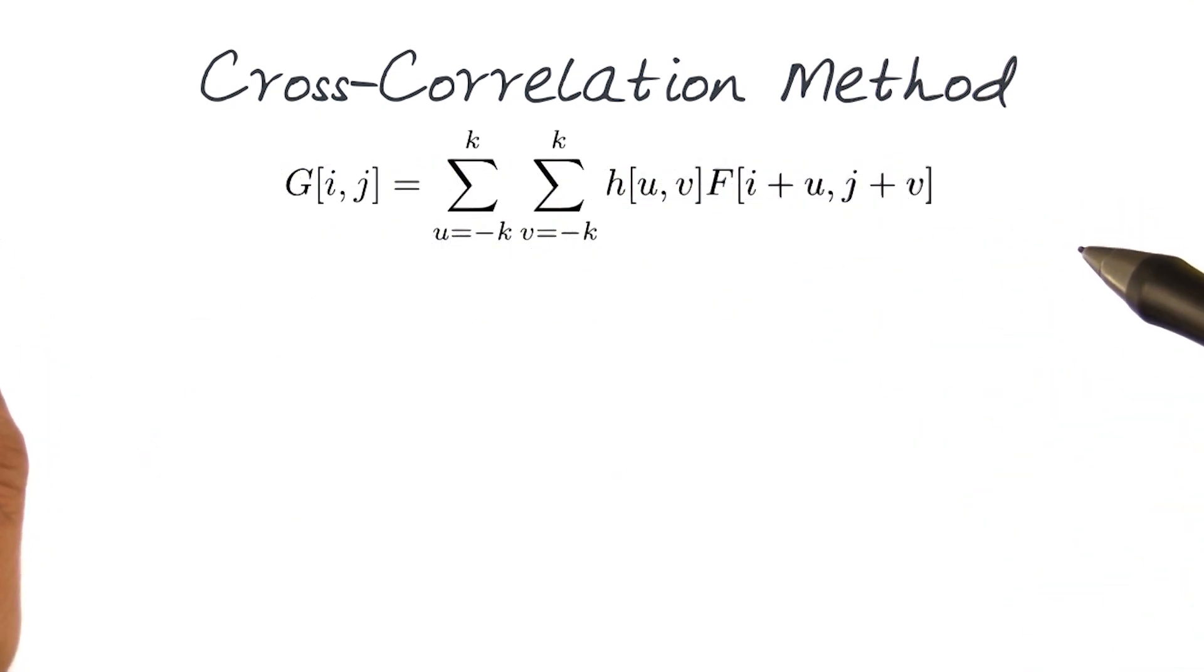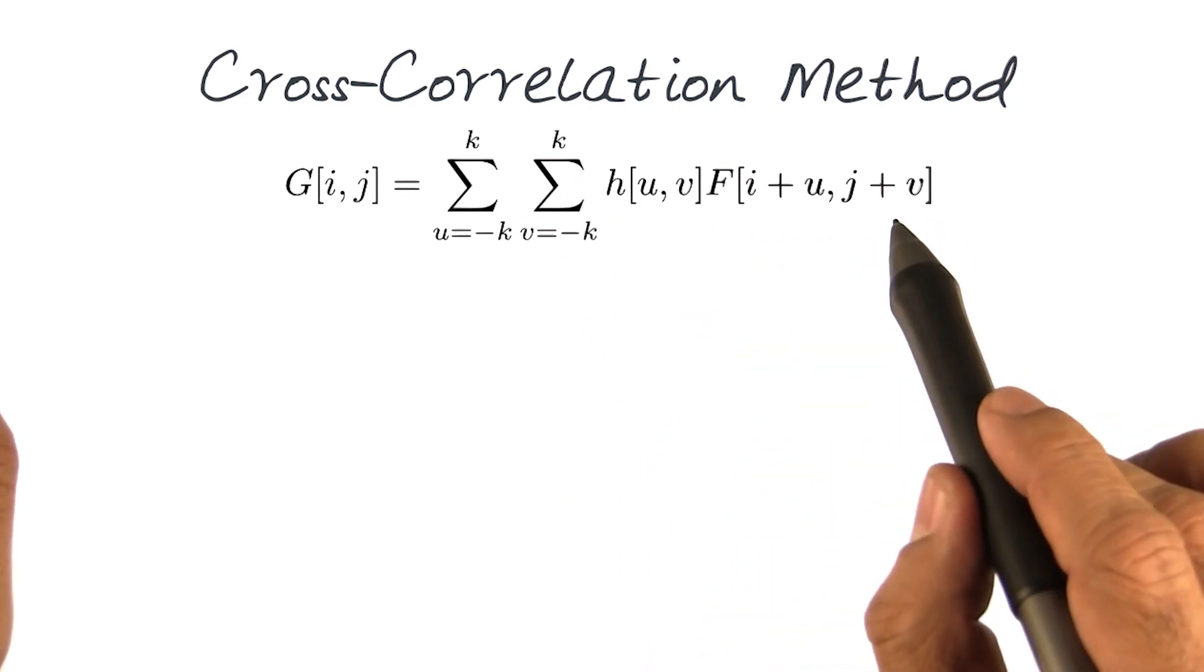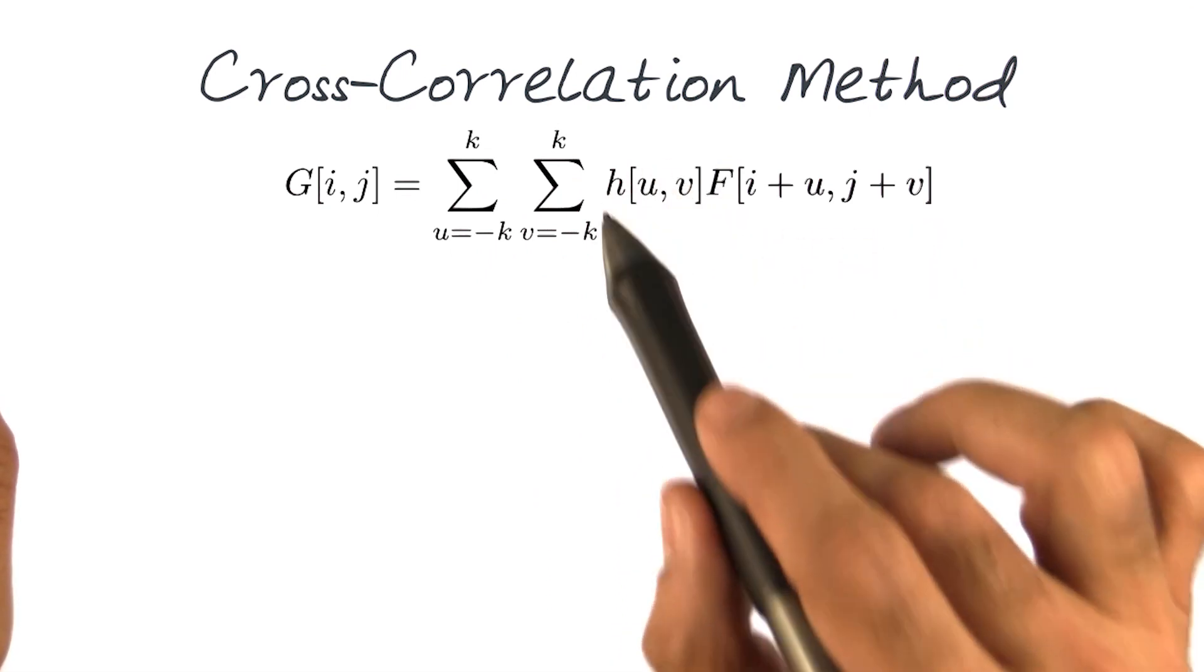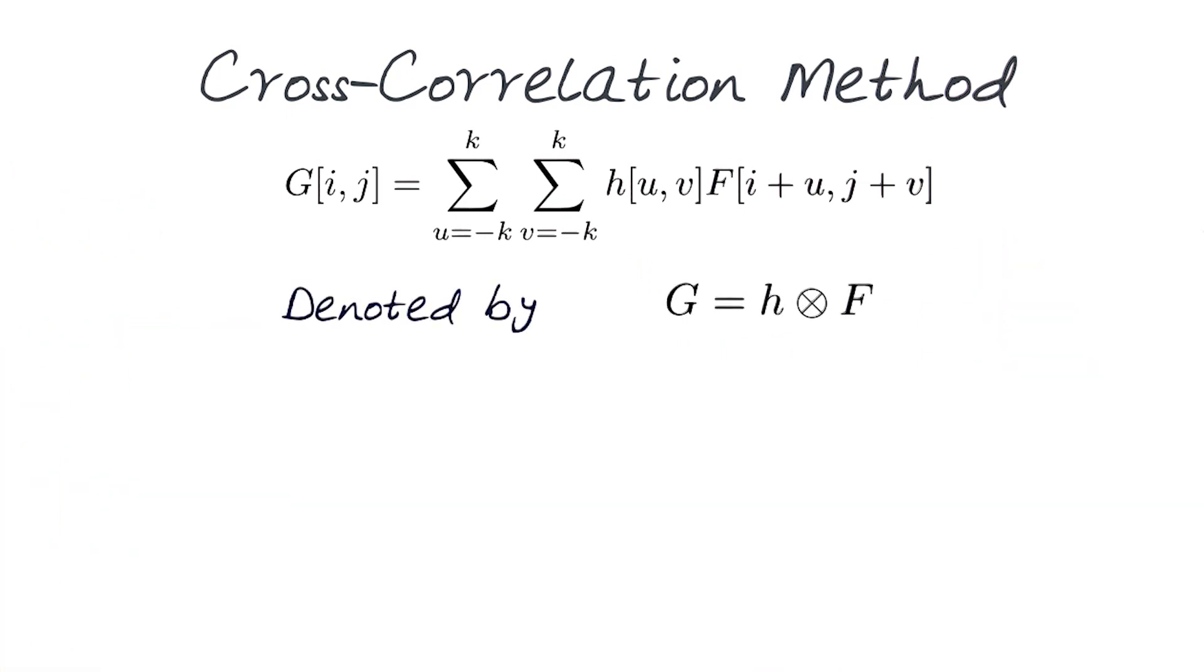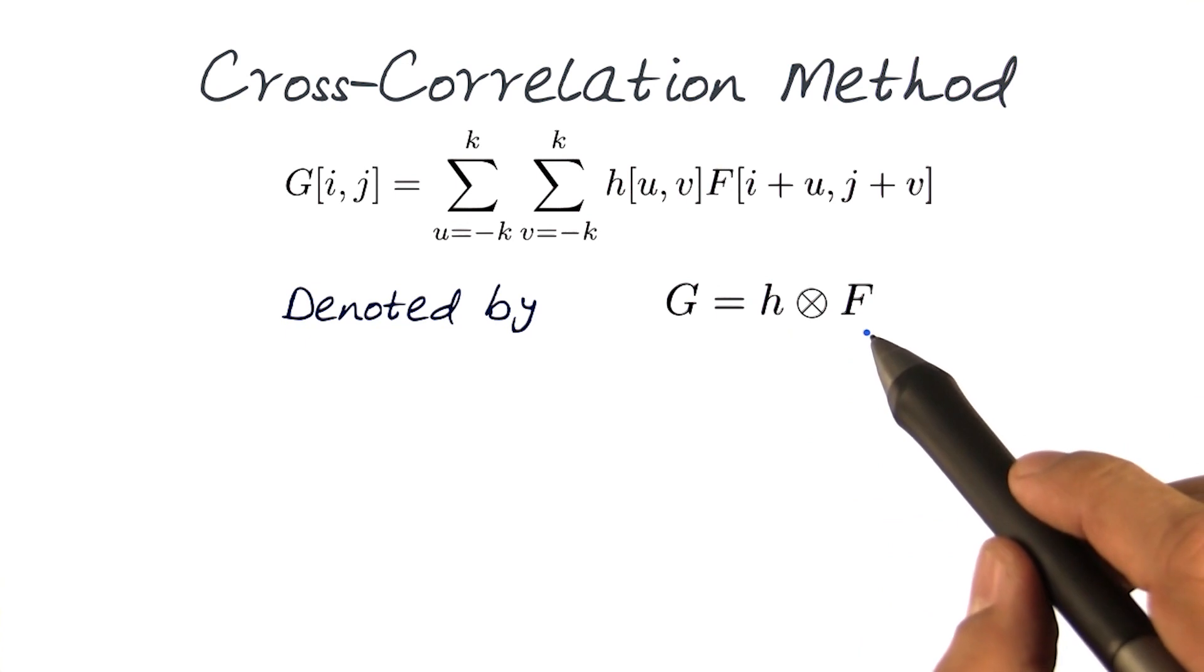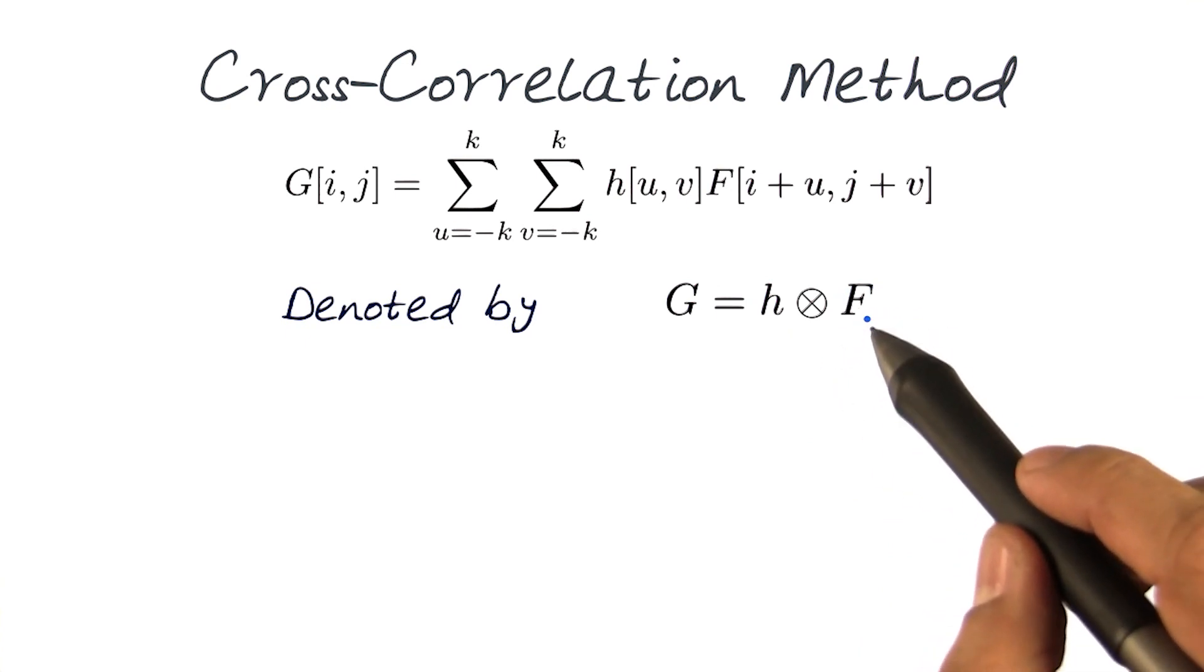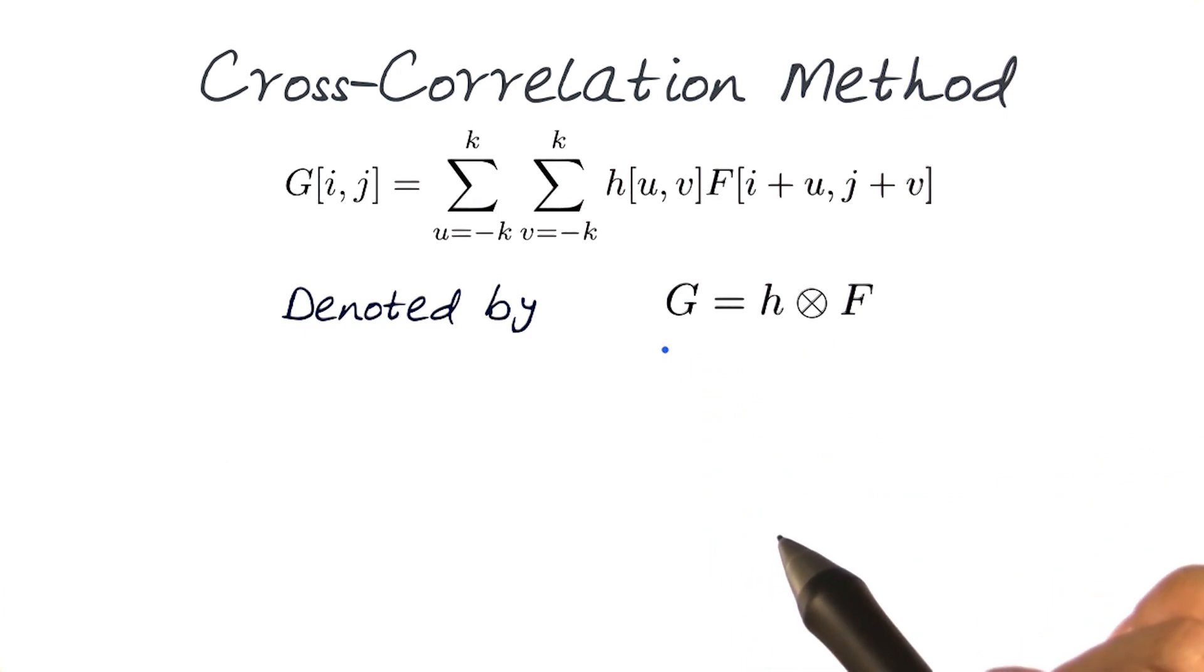Mathematical notation of cross correlation is shown here. Again, we are using the two summations and looping over the whole image with non-uniform attribute weights. Mathematically, we denote this by a symbol here, where basically the kernel H is being cross correlated with the output signal F to generate an output G.